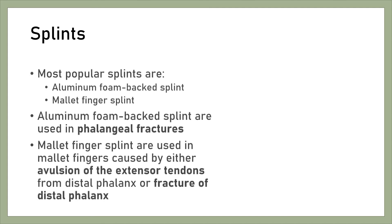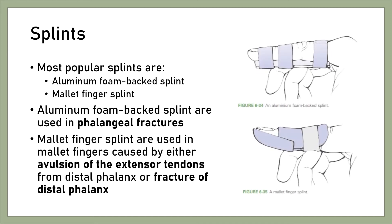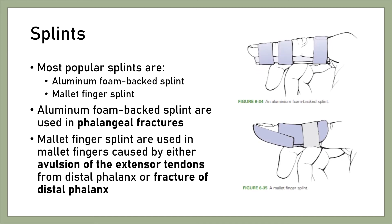Splints: The most popular splints are the aluminum foam-backed splint and the mallet finger splint. Aluminum foam-backed splints are used in phalangeal fractures, while mallet finger splints are used in mallet fingers caused by avulsion of the extensor tendons from the distal phalanx or fracture of the distal phalanx.